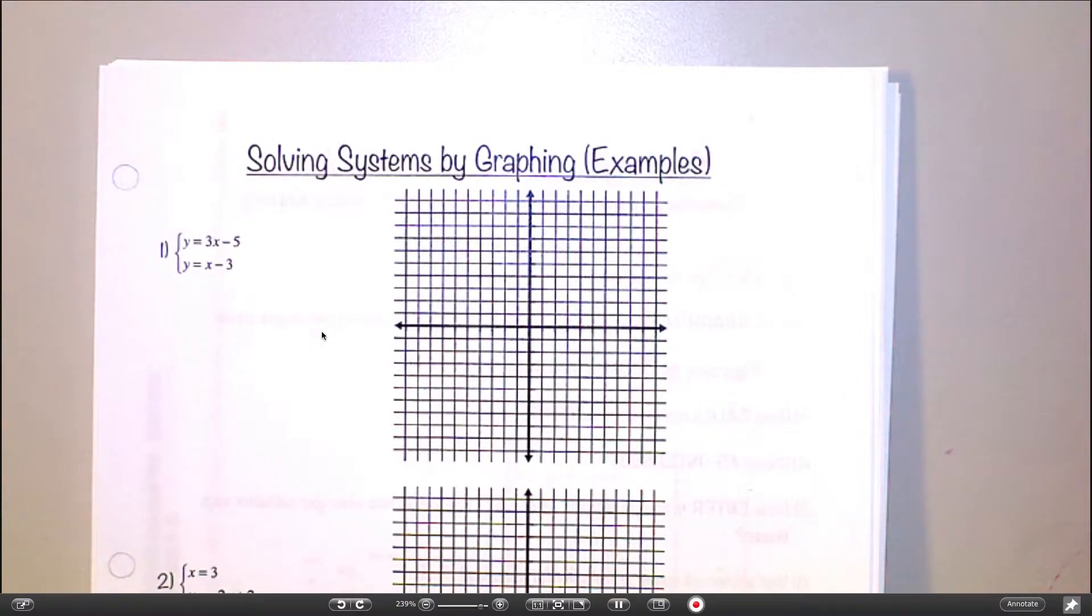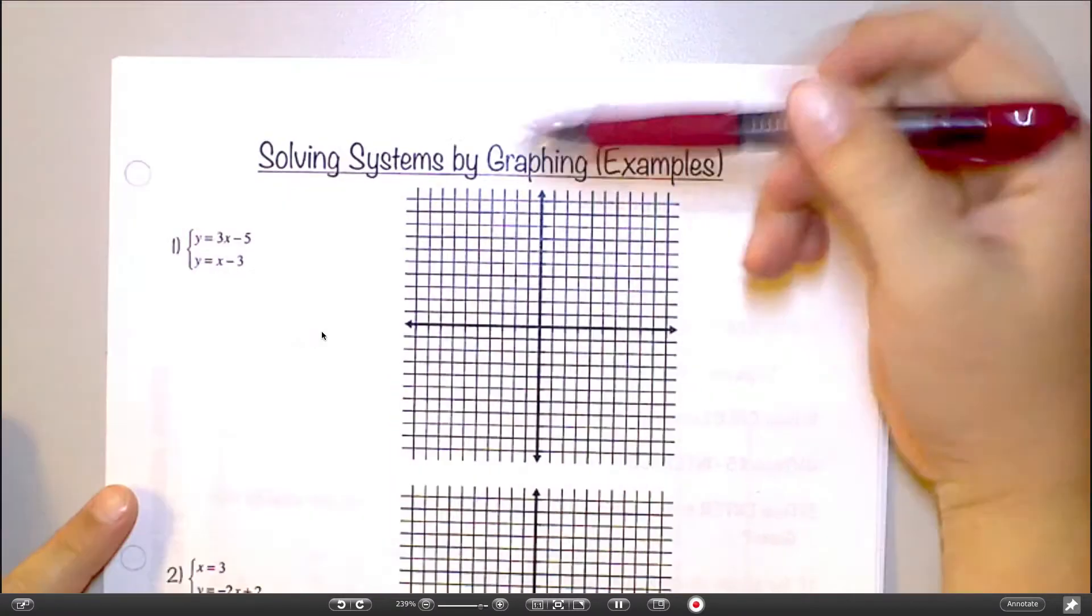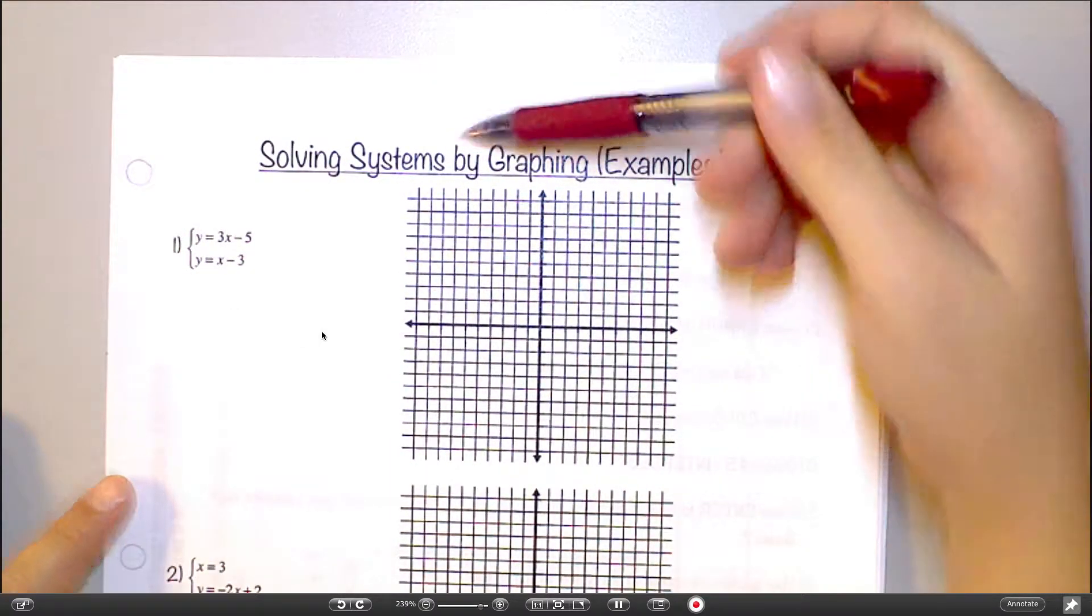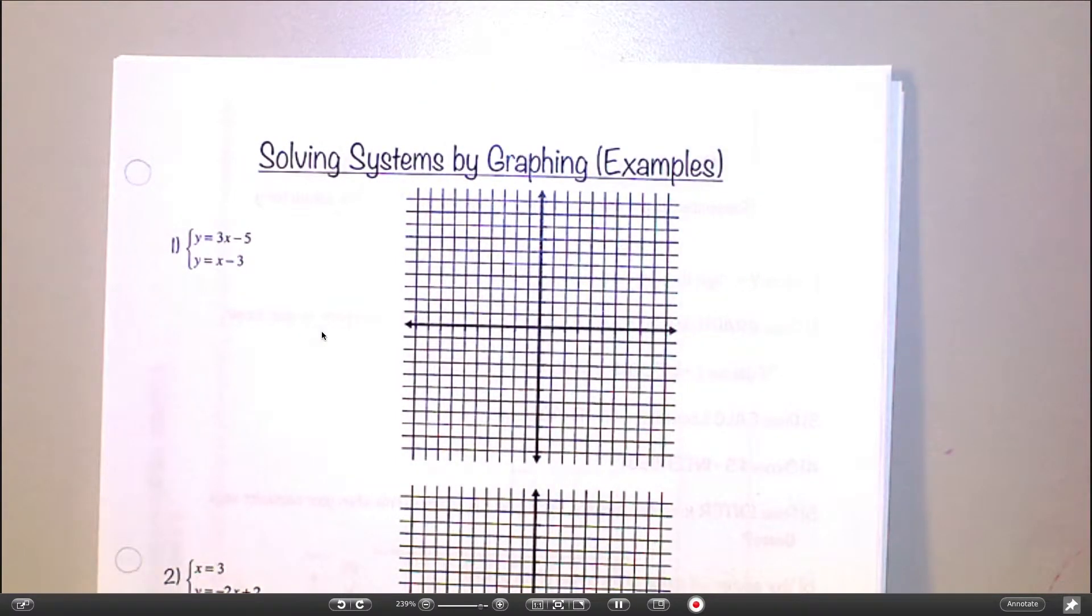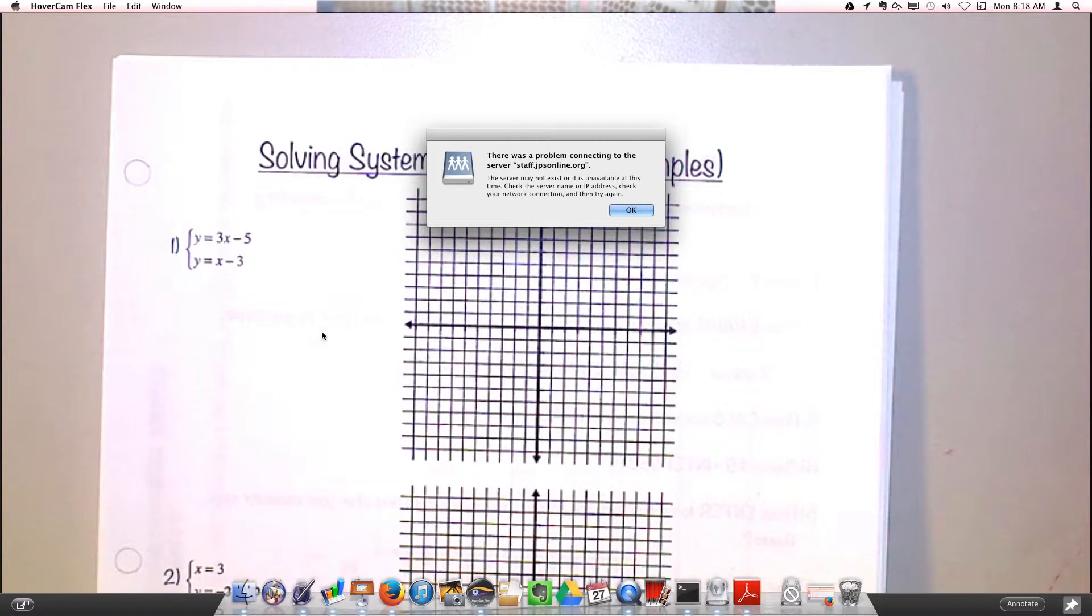Today we're talking about solving systems by graphing. Let's talk about what I mean by systems, because that's what the majority of this chapter is about: a system of equations. Mathematically, when I say a system, I'm really talking about more than one equation at one time, and you have to find a solution that works for more than one equation at the same time.